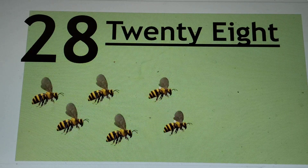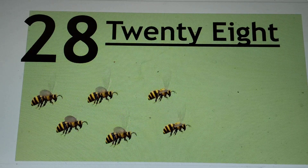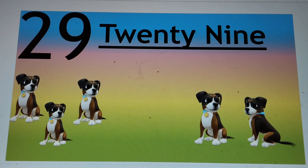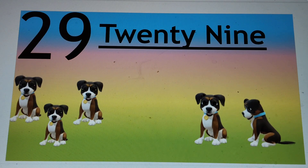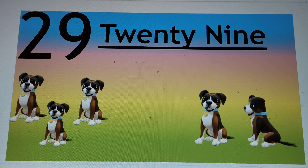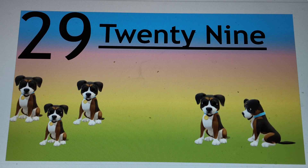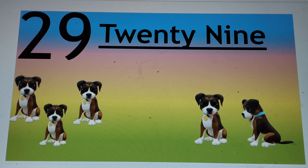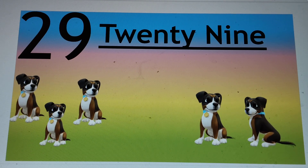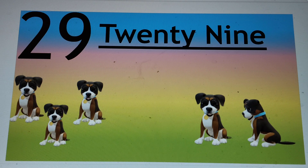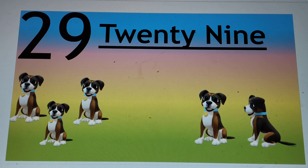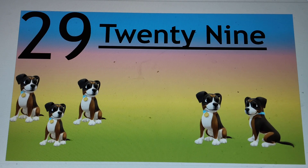Next number is 29. You write it like 2 and 9. And the number name is T-W-E-N-T-Y N-I-N-E. Say hi to 29.